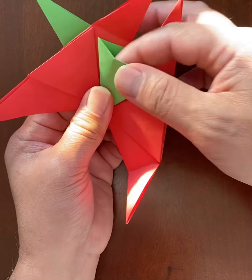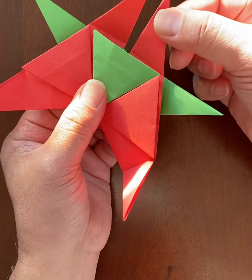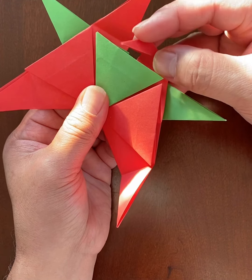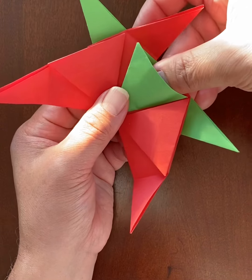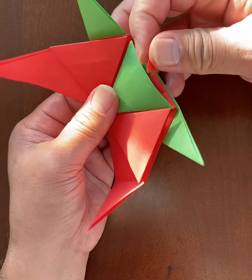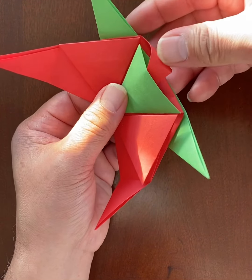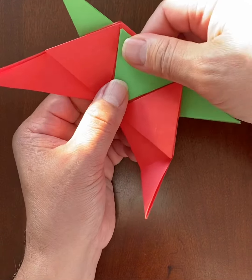I'm going to take these two long flaps of the red modules, tuck them into this green triangular section, just like that.